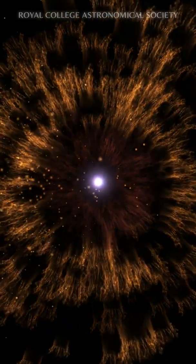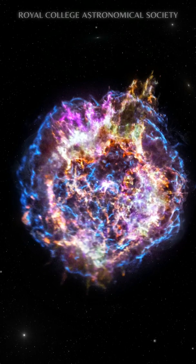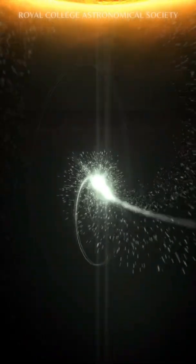A supernova can happen when a star reaches the end of its life and explodes in a brilliant burst of light. They can briefly outshine entire galaxies and radiate more energy than our sun will radiate throughout its entire lifetime.